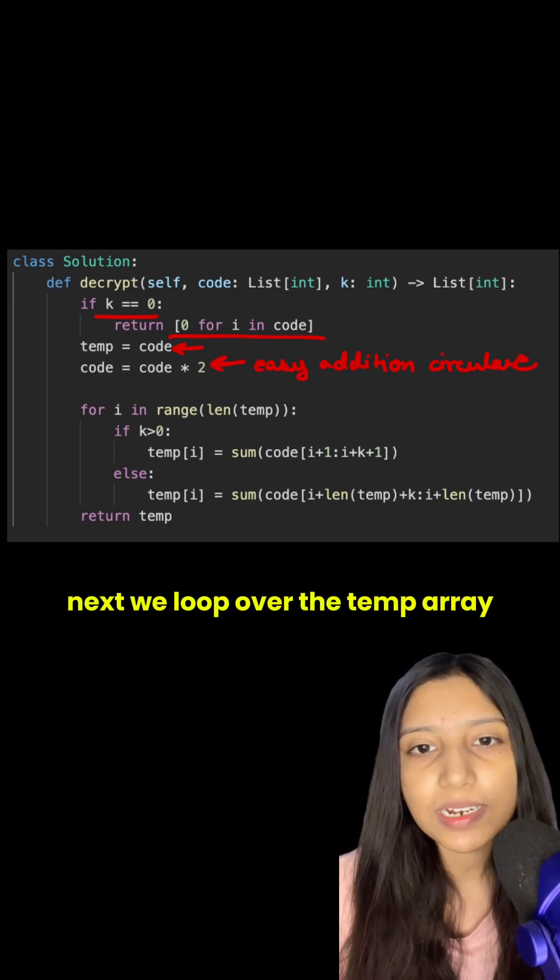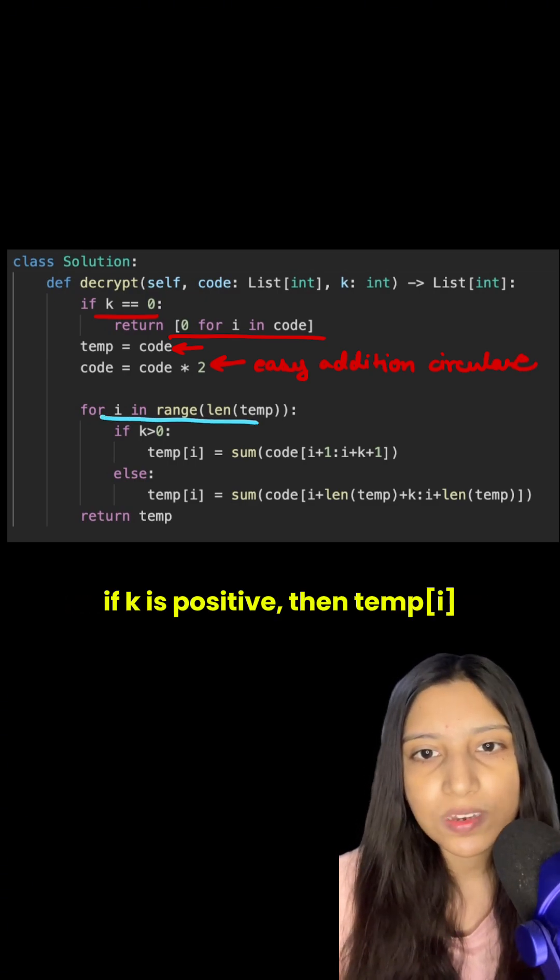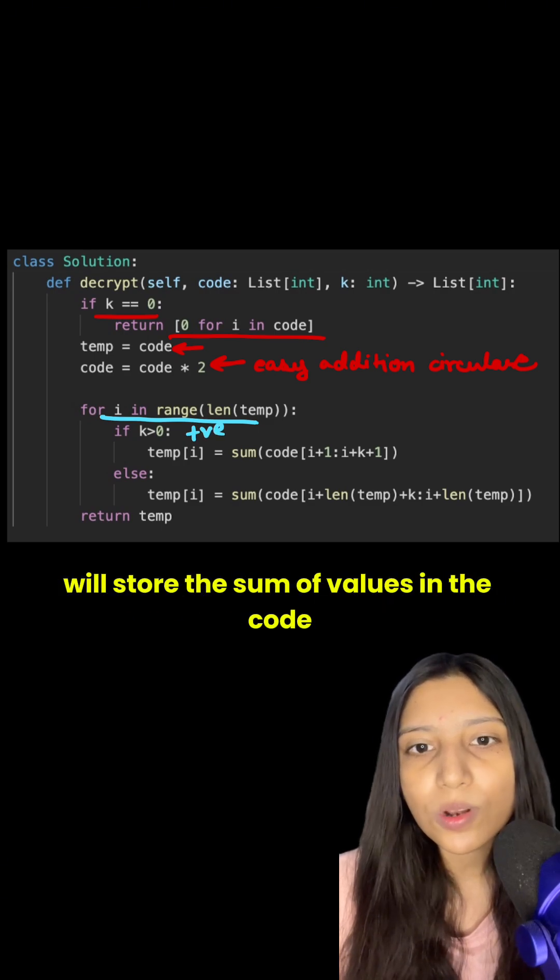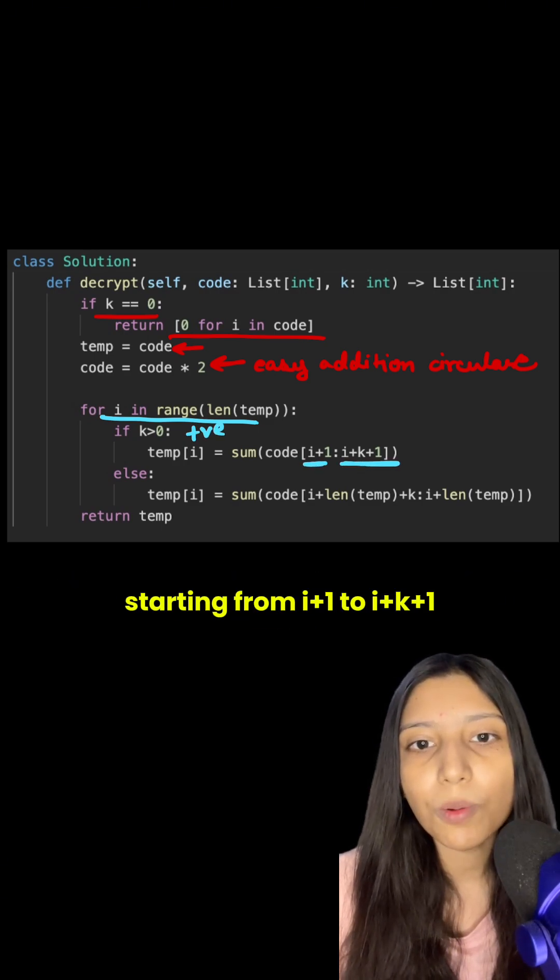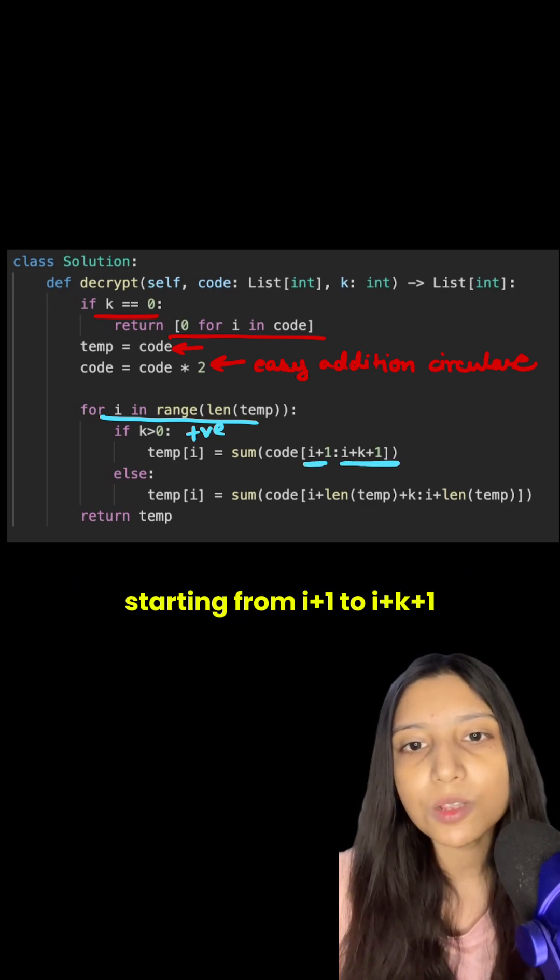Next we loop over the temp array. If k is positive, then at temp i, we store the sum of values in the code starting from i plus 1 to i plus 1 plus k.